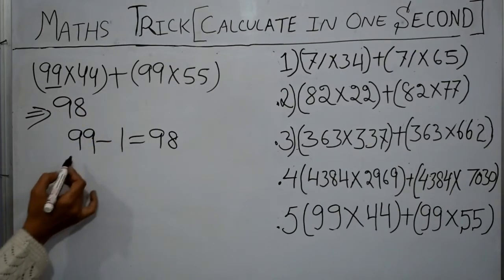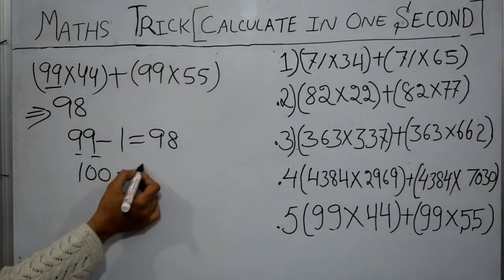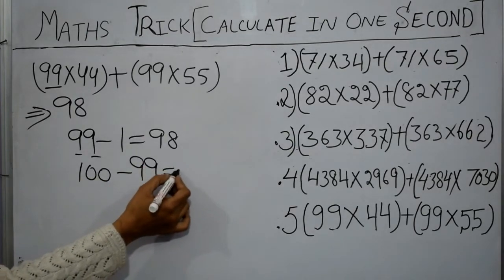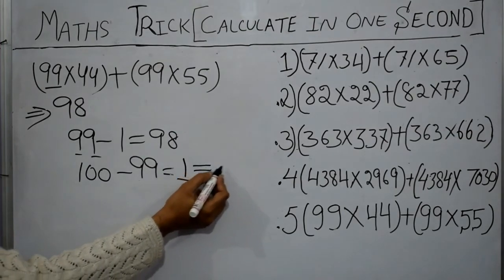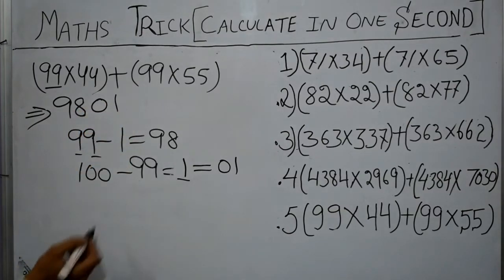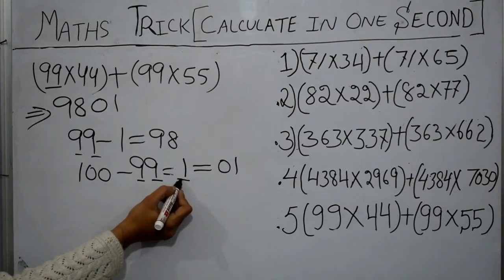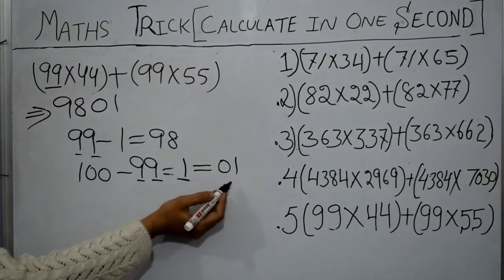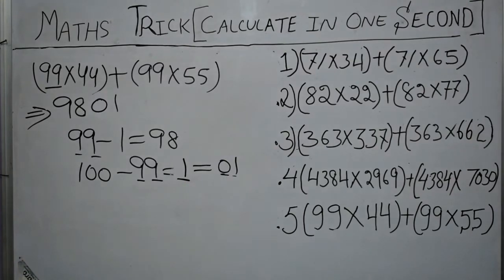Because this is of two digits, we will subtract it from 100 now. 100 minus 99 is 1, but we will not write it as 1. We will write it as 01 because 99 is of two digits and we cannot put only one digit. So we will put 0 in front of 1.